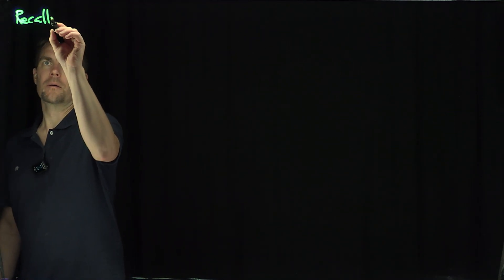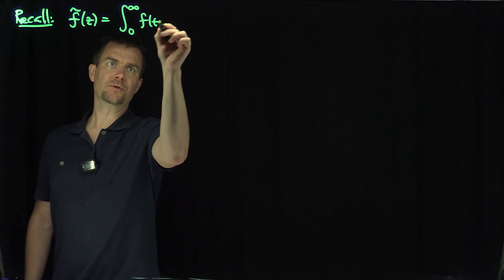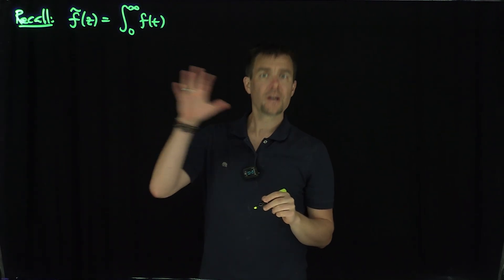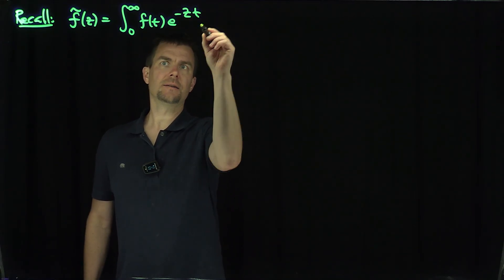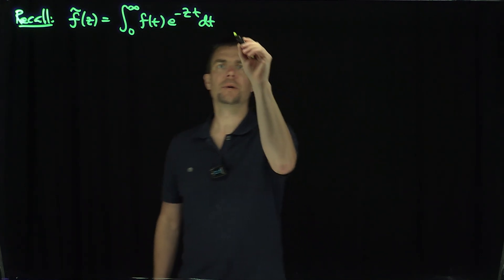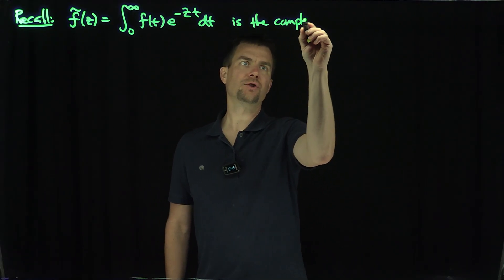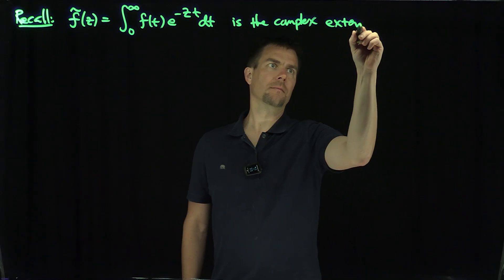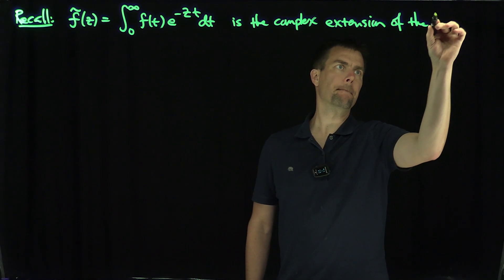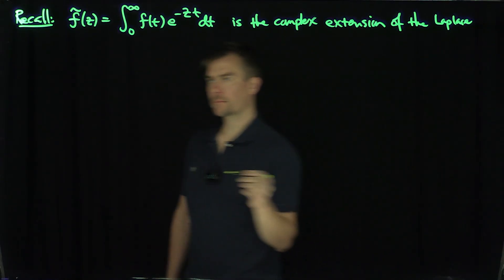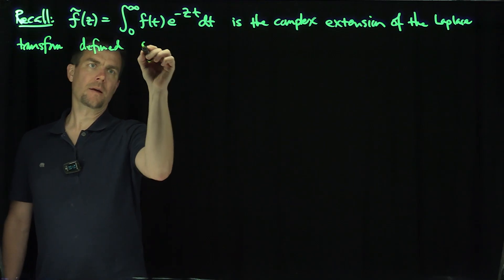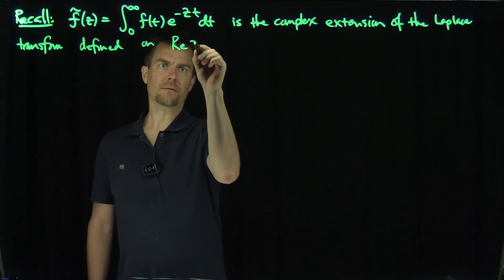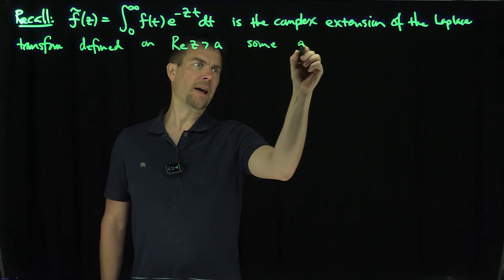Let's recall that the Laplace transform, f-tilde of z, which is the integral from 0 to infinity of f of t — where f of t is just a function which maps (0, infinity) into R — times e to the negative z t, dt, is the complex Laplace transform, the complex extension of the Laplace transform.